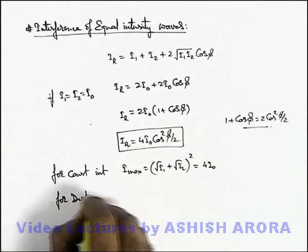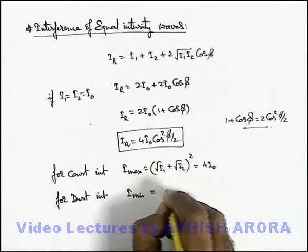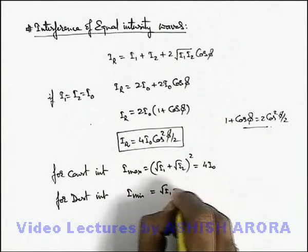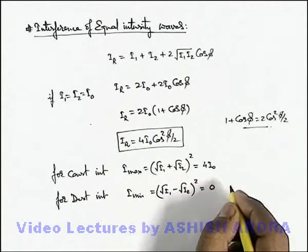And for destructive interference, the minimum intensity is given as (√I₁ - √I₂)², which will be zero if the intensities are equal.